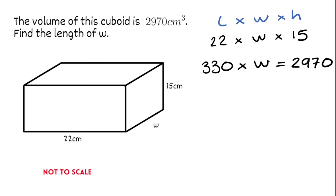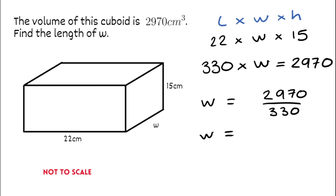To find w, we divide through by 330. So 2,970 divided by 330 gives w equal to 9. Looking at the question, it asked for the length, so we include units: the answer is 9 centimetres.